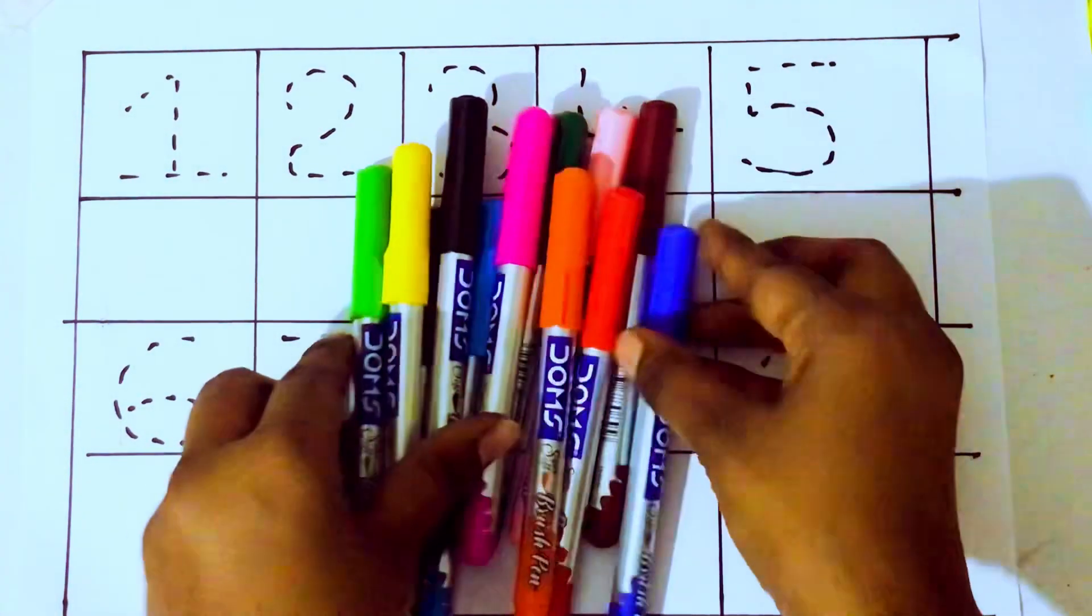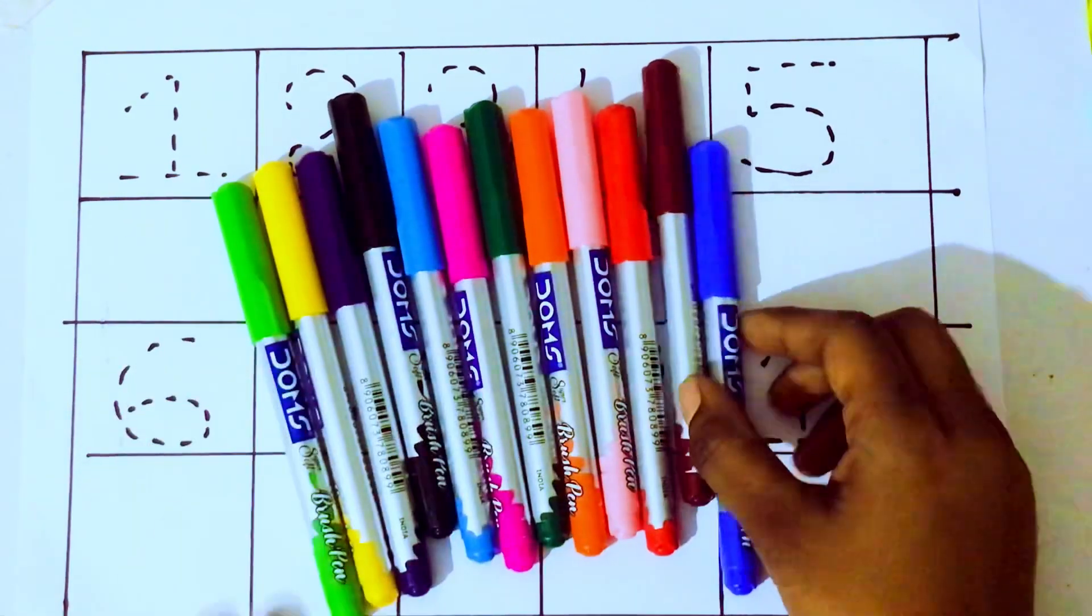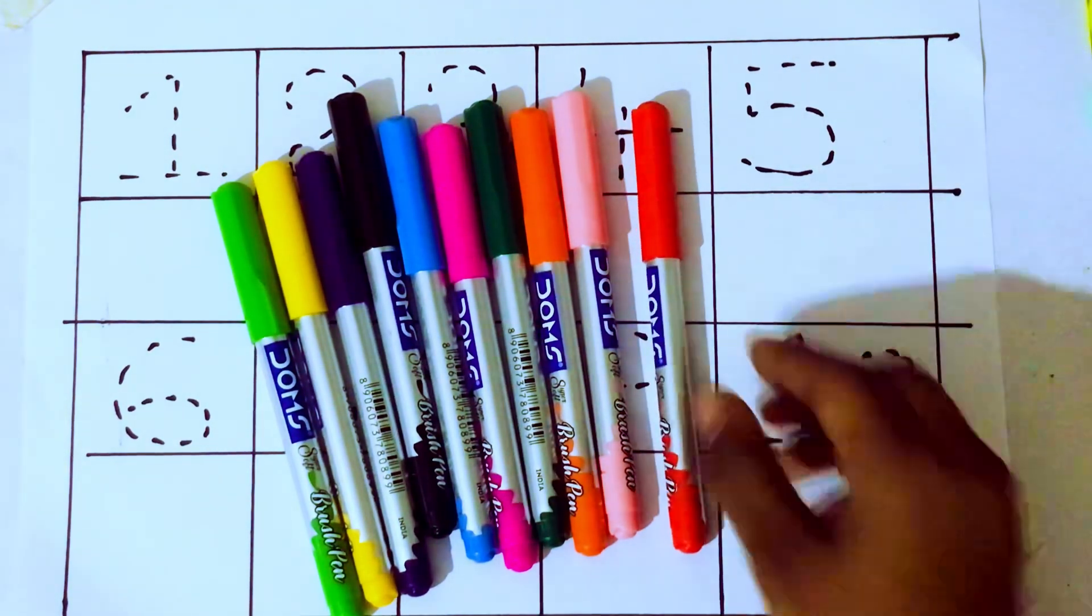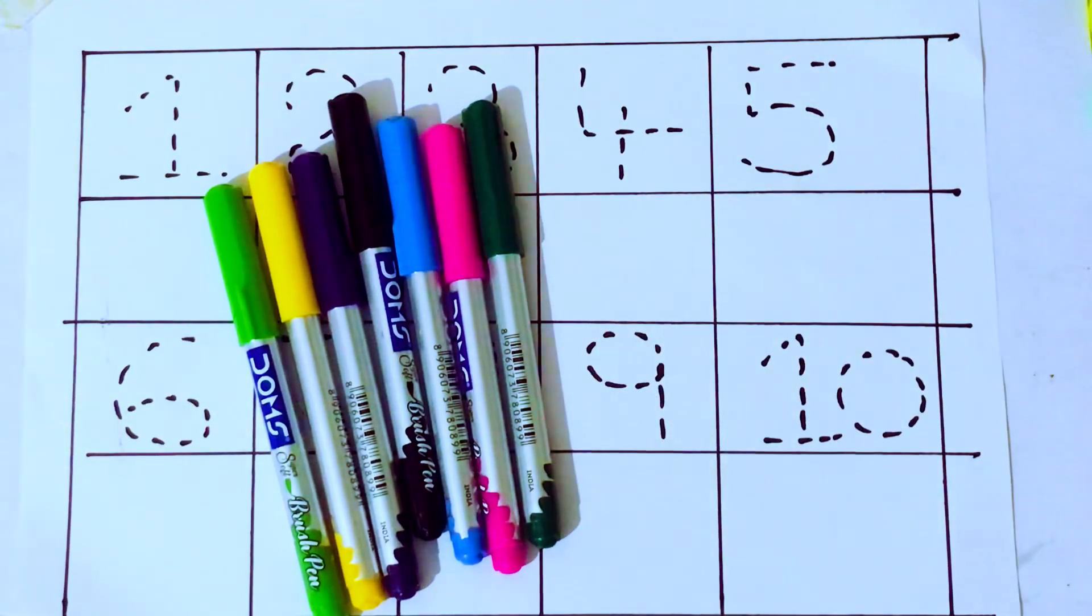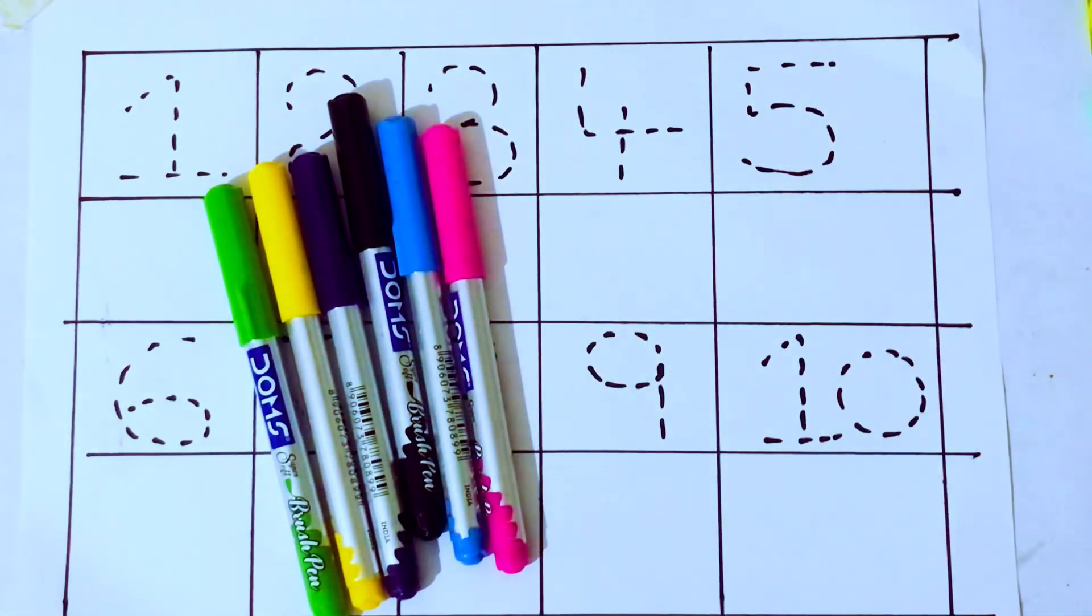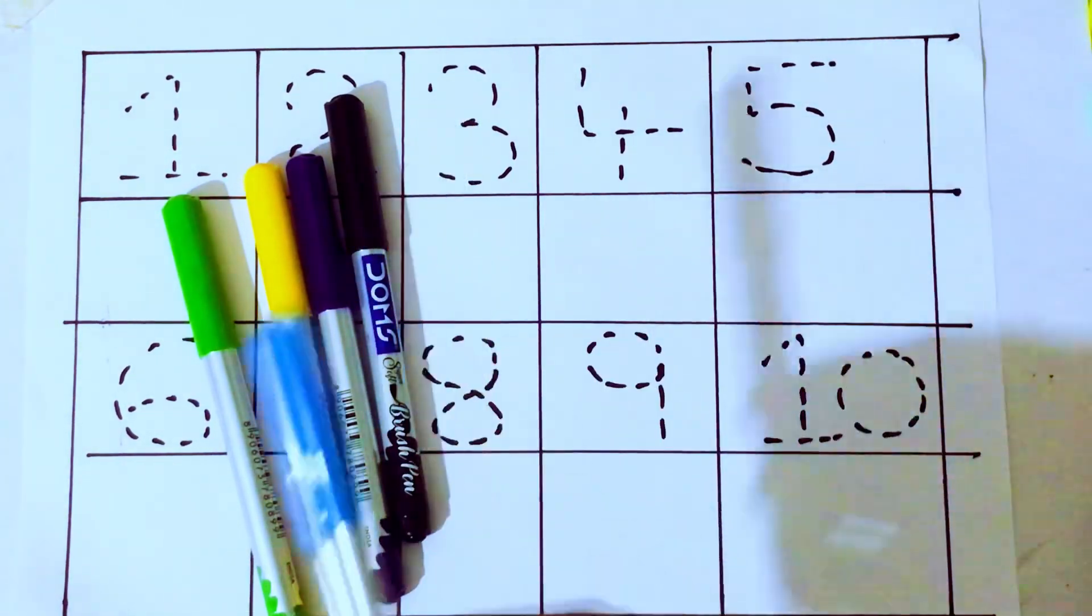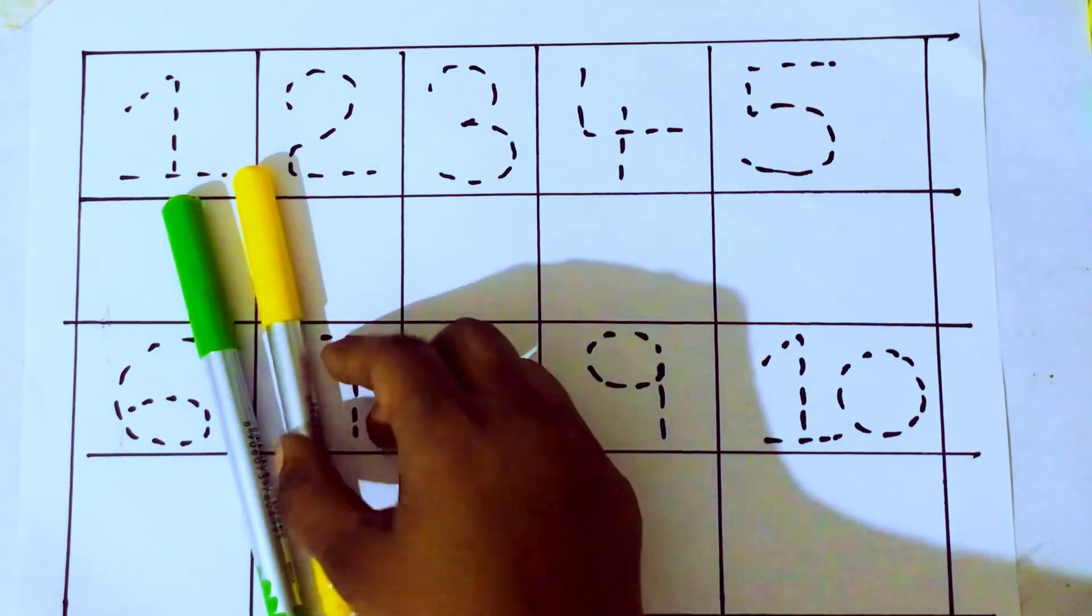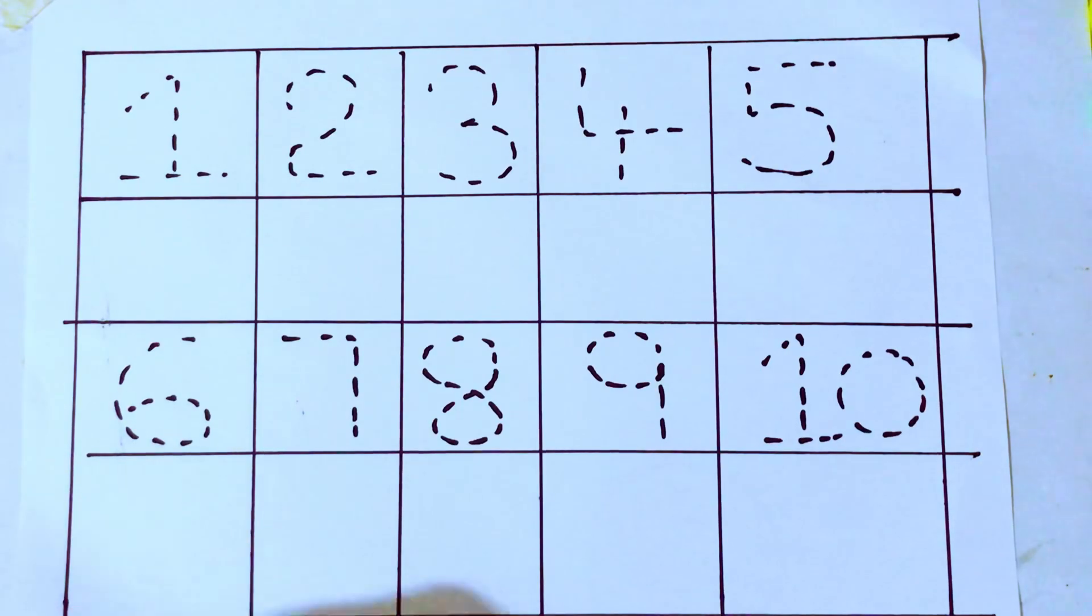These are all the color pencils. Let's learn the names: blue color, brown color, red color, light pink color, orange color, green color, pink color, sky blue color, black color, violet color, yellow color, and green color. Let's draw the numbers.